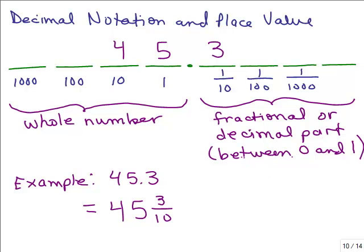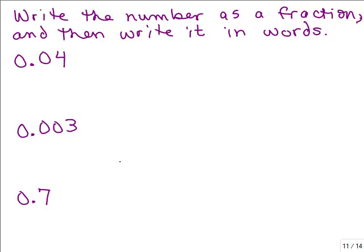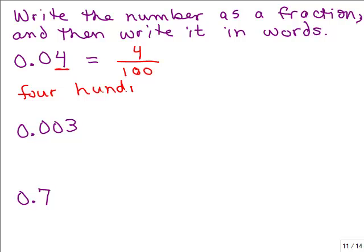We want to write each number as a fraction and then write it in words. These only have one digit that's not a zero. So what is 0.04? We've got a 4 — it's two places after the decimal point, so it's 4 hundredths. Written in words: four hundredths. Remember to put the TH on the end — "hundredths" — not "hundred." It tells you it's less than 1.